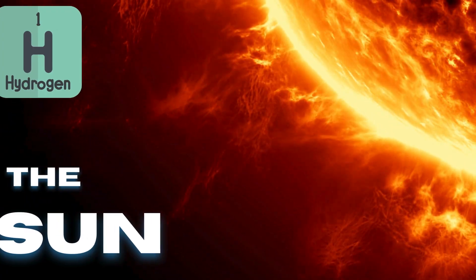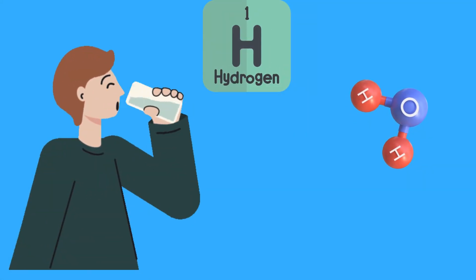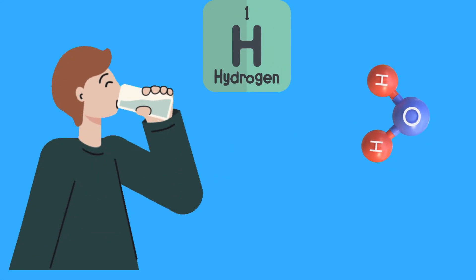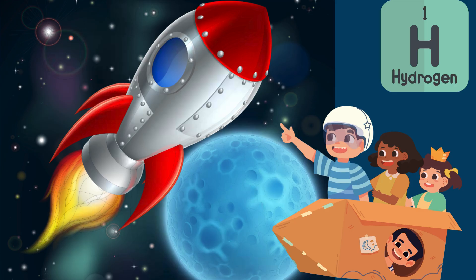On Earth, we find hydrogen in water, because water is made of hydrogen and oxygen. Hydrogen is also used as rocket fuel to launch spaceships into space!